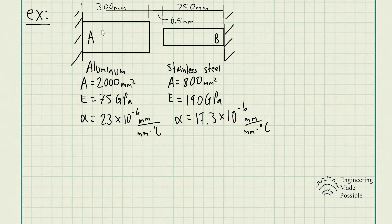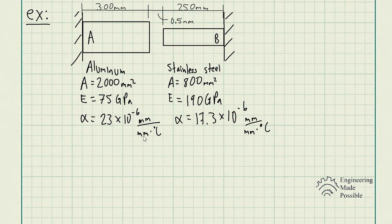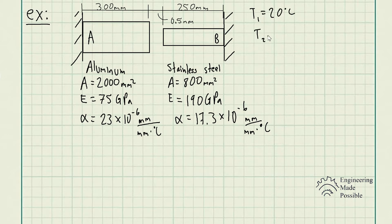Here you can see we have rod A, which is made of aluminum. We have the cross-sectional area given, the modulus of elasticity, as well as the coefficient of thermal expansion, which is 23 times 10 to the negative 6 mm/mm·°C. We have rod B, which is stainless steel, with the cross-sectional area, modulus of elasticity, and coefficient of thermal expansion. T1, the original temperature, is 20 degrees Celsius, and T2, as the problem statement gives us, goes up to 140 degrees Celsius.